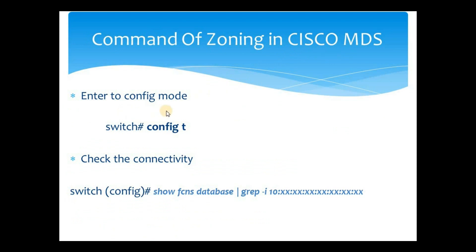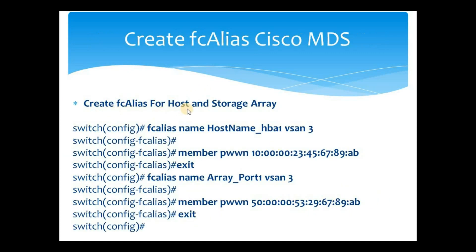Now let's start with the commands. First, we enter config mode by executing the command 'config t', where t stands for terminal. Once executed, the prompt changes and you can see 'config' in brackets, confirming we are inside configuration mode. Then we check connectivity using the command 'show fcns database | grep -i' followed by the WWPN of the HBA port or storage array port. This shows whether the HBA port or storage array port is connected to the fabric and ready for zoning.